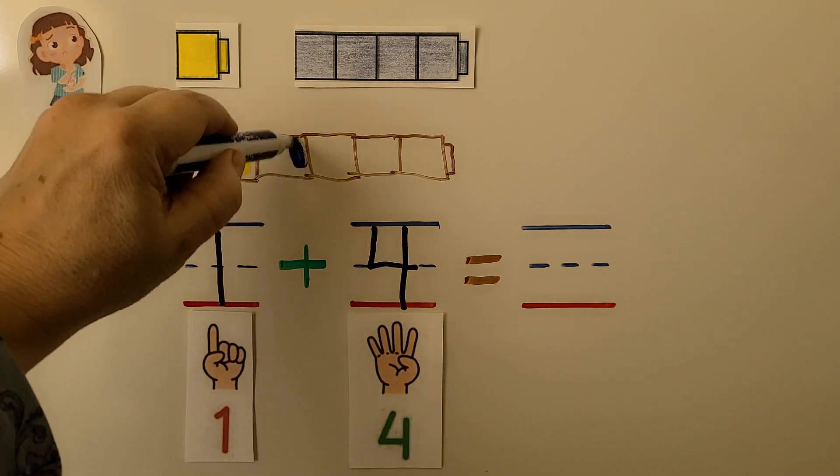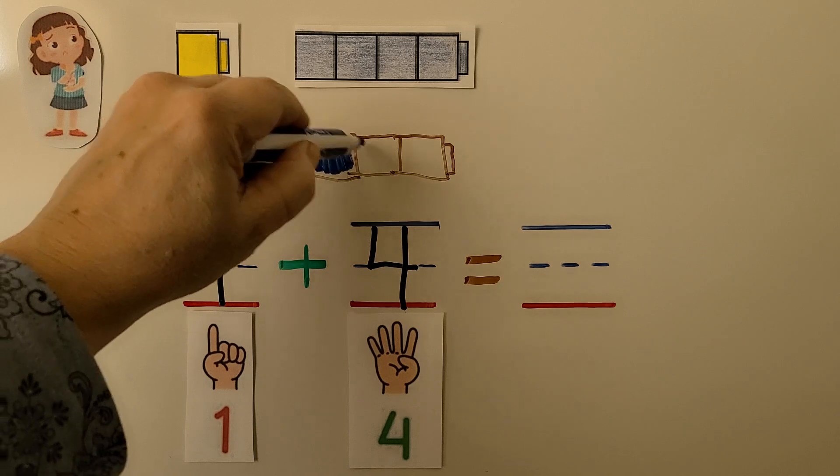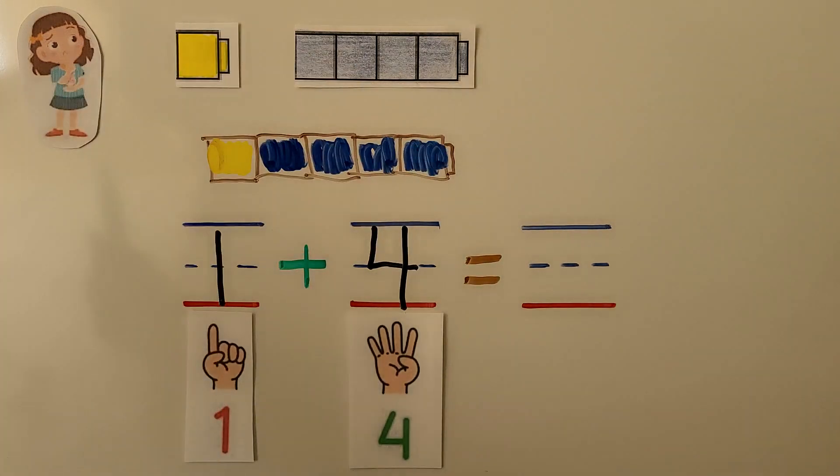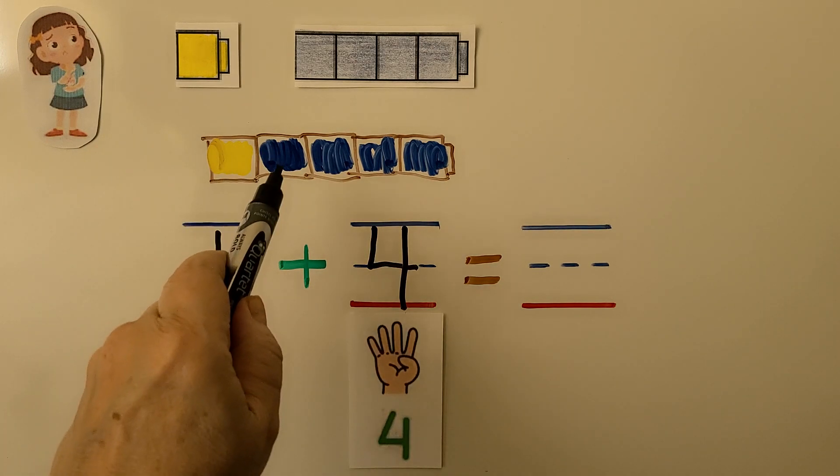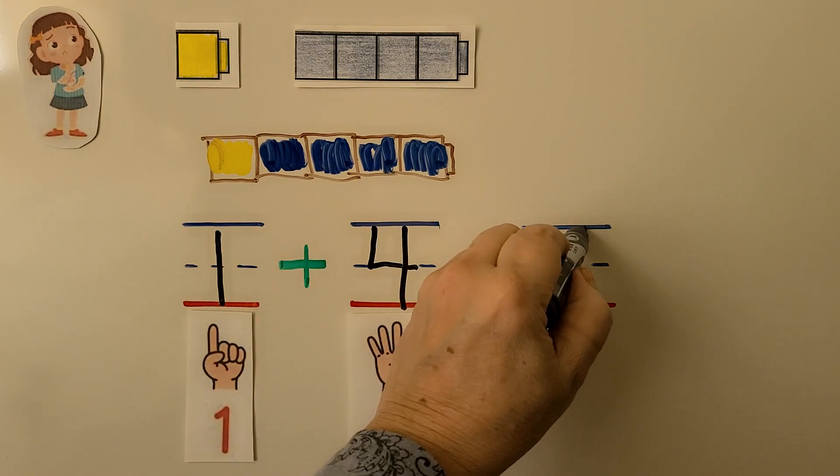You'll probably do a better job of coloring than me because I'm using markers. We can color each one. And then we can count the cubes in the cube train. There's one, two, three, four, five. We can write the number five.